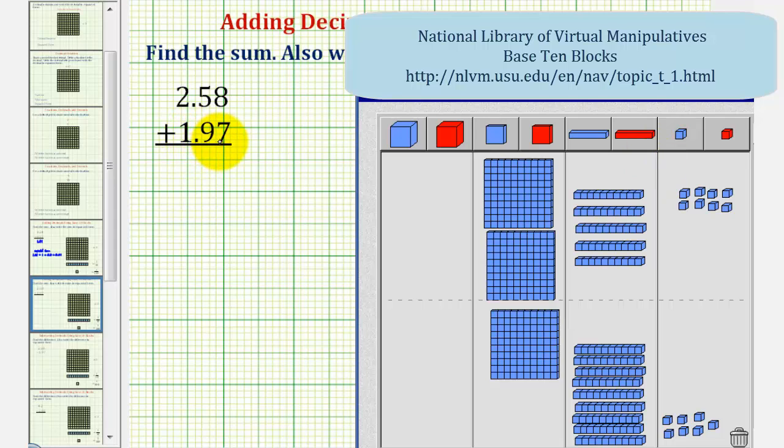For one and ninety-seven hundredths, we have one flat for one whole, nine longs for nine-tenths, and seven bits for seven-hundredths.